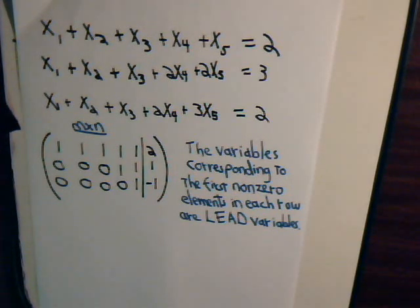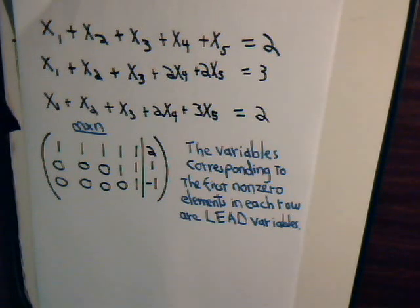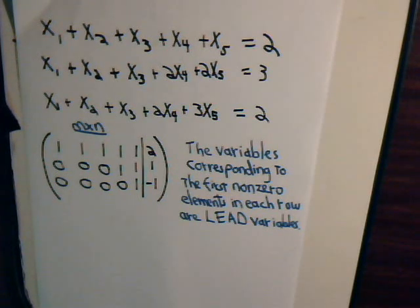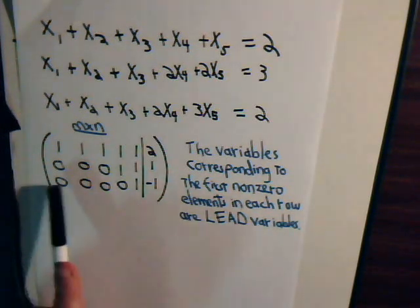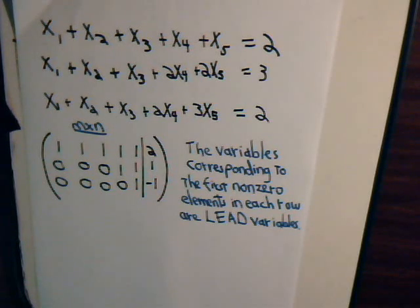In the last video, we were discussing underdetermined systems — situations where we have more equations than there are variables. We had, for example, three equations but five variables, and we asked ourselves if there is a solution to this set of equations. We went ahead, set up the augmented matrix, and when we got it in its final form, we introduced the concept of lead variables and free variables. The variables that correspond to the first non-zero elements in each row are the lead variables.